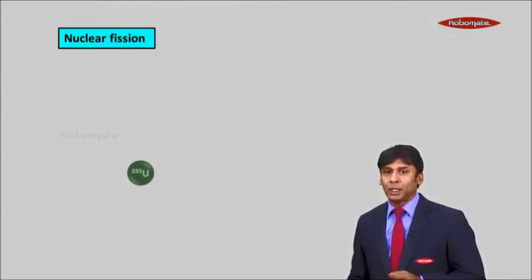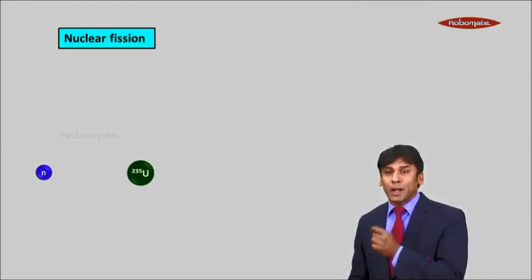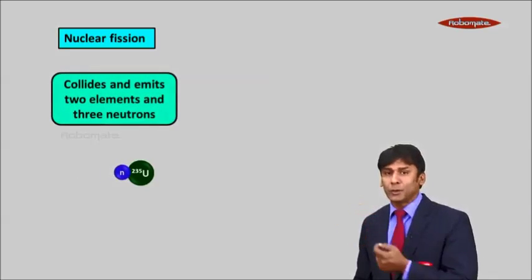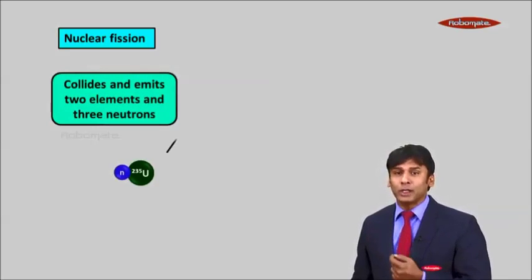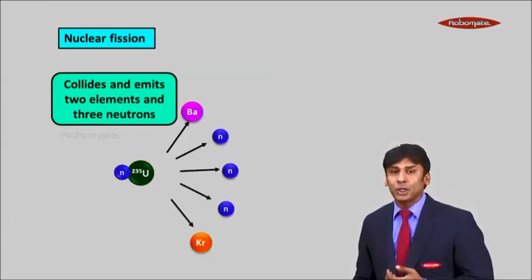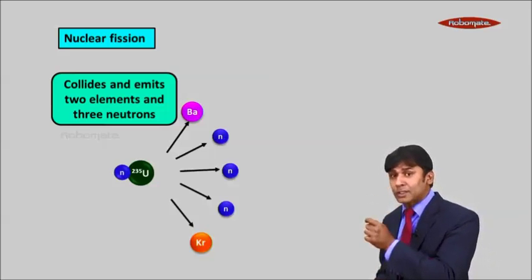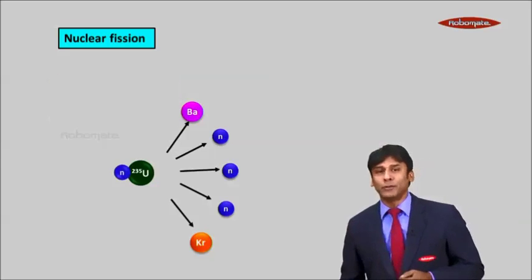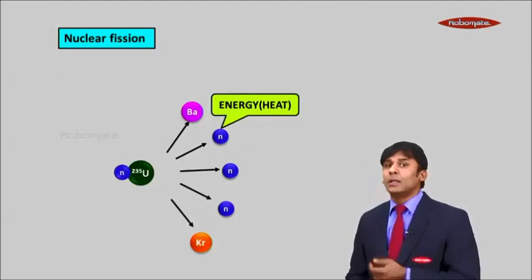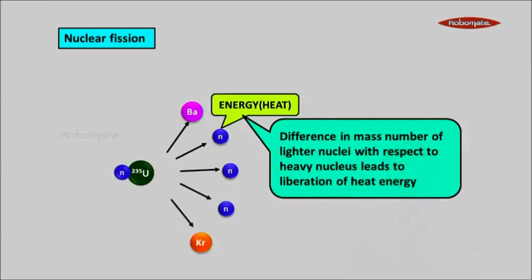Let's understand how this happens. When uranium-235 is bombarded by slow-moving neutrons, or thermal neutrons, they collide with uranium-235 and it splits into barium and krypton with the ejection of three neutrons. The mass of barium, the three neutrons, and krypton is slightly less than uranium-235. This mass gets converted into heat. The difference in mass number of the lighter nuclei with respect to the heavy nucleus leads to the liberation of heat energy.